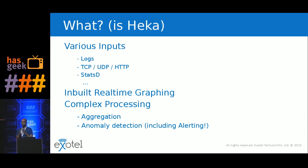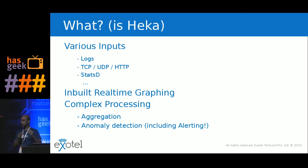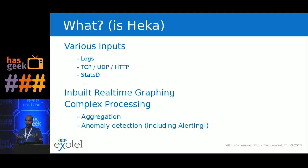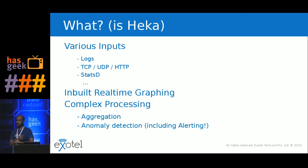HECA can do some really cool things, especially with respect to time series data. HECA uses a circular buffer internally to store time series data. The circular buffer size is something you define — how many data points you want, for the last 5 minutes or the last half hour. Because of that circular buffer, it can do a lot of other things like inbuilt real-time graphing, so you don't technically need Grafana. It can also do complex processing like aggregation — aggregating data for the last 5 minutes and sending it to a central server.